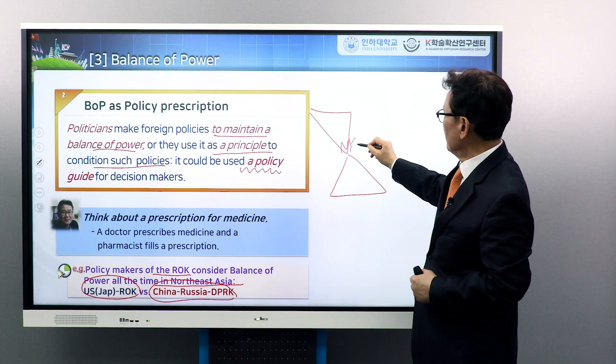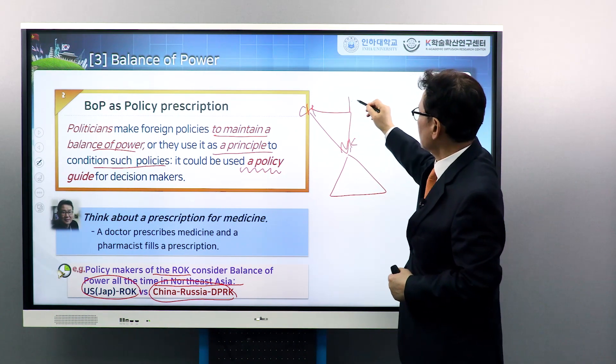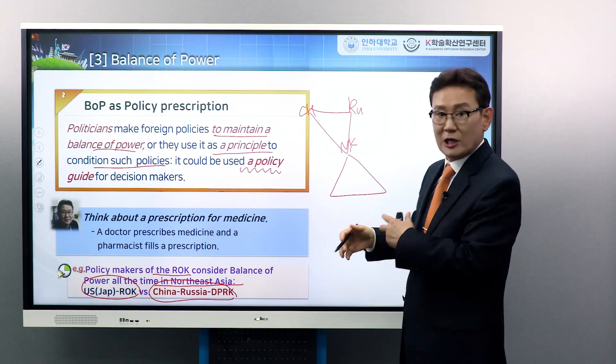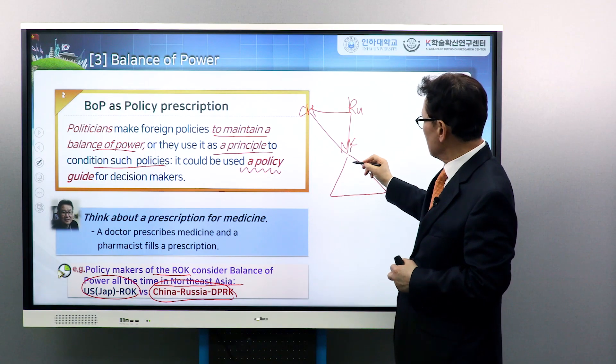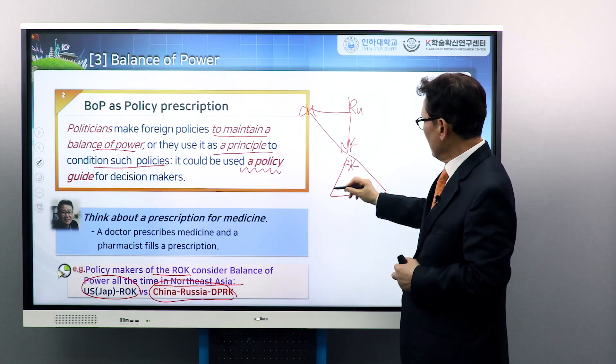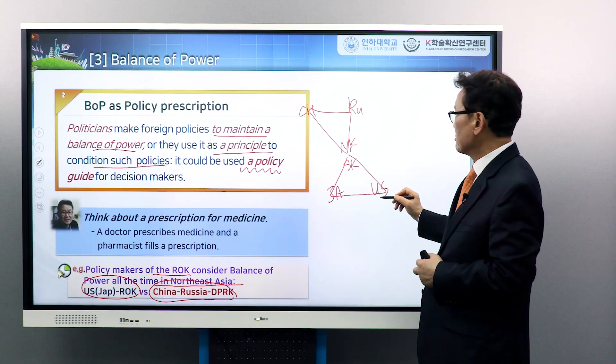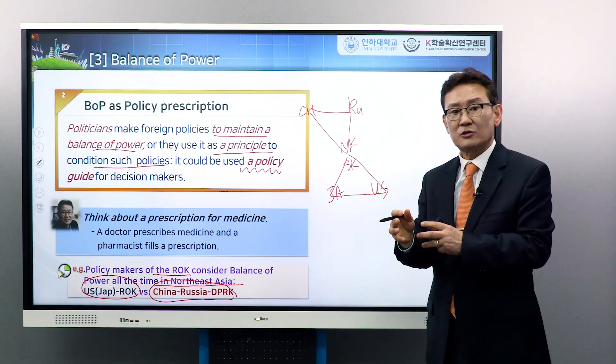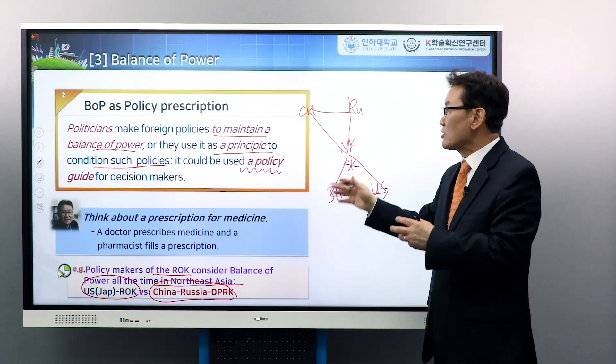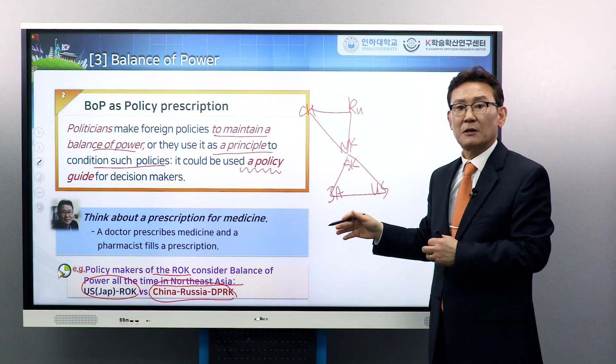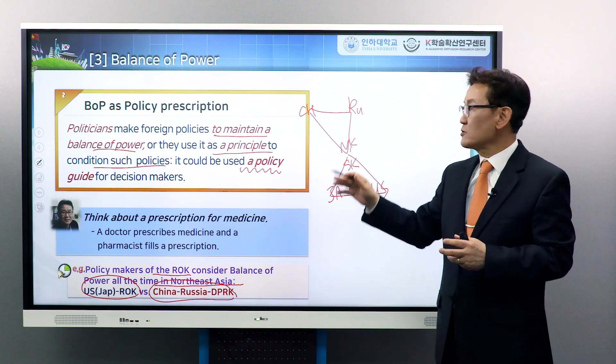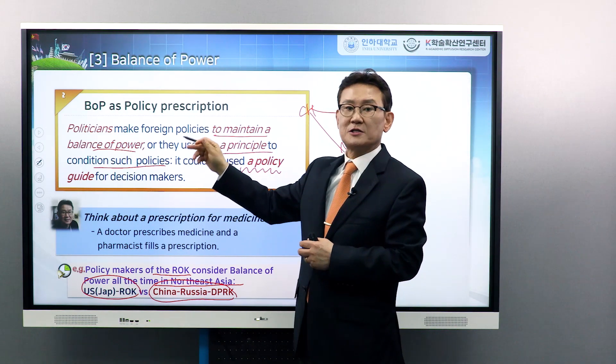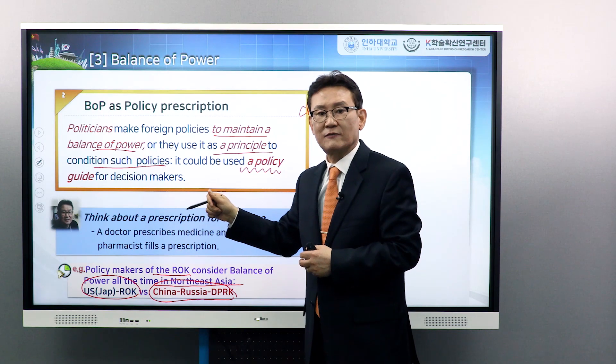It is North Korea, China, and Russia, if not a legal alliance, it's an alleged alliance among three countries. This is South Korea, Japan, and the US. So South Korea and other countries' politicians continuously consider the situation of balance of power when they make policies. Balance of power is certainly used as a policy prescription, a policy guide for decision makers.